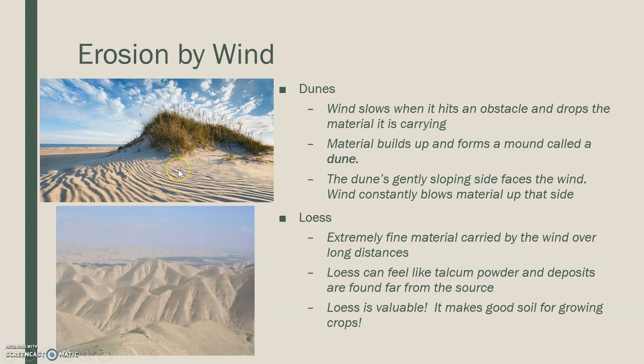Dunes are like the ones shown here and in this picture below — you've probably also seen them at the beach. Wind slows when it hits an obstacle, so dunes prevent wind from blowing everything across a flat plain. When wind hits an obstacle, it drops the material it's carrying, which allows that dune to grow even bigger. When wind drops material over and over again, it builds up and forms a mound — the dune. The dune slopes on both sides, but the side facing the wind continues to build up as wind constantly blows material up that side.